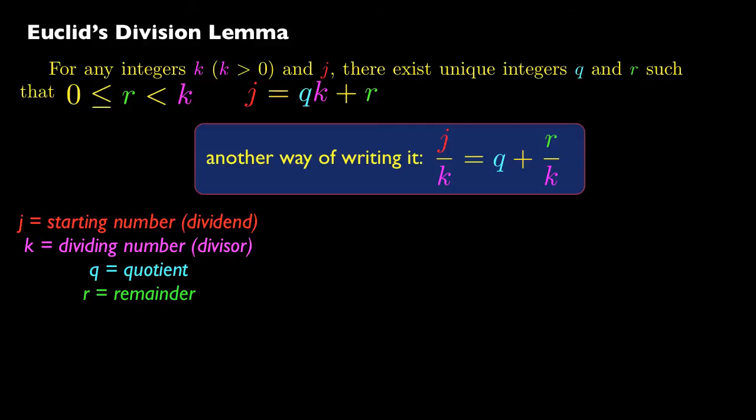So what it's basically saying is that if you have a starting number, which is sometimes called a dividend, but people tend not to use that language anymore in the school system much nowadays. And then if you have k, or dividing number, or divisor, then for any starting number and dividing number, you can get a quotient and a remainder.